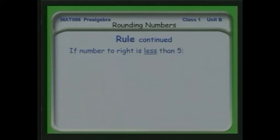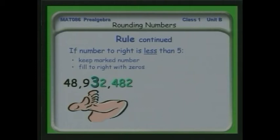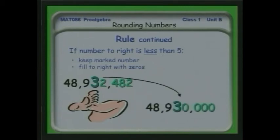Now, if the number to the right of wherever you've marked is less than 5, then we keep the marked number and fill in to the right with zeros — we don't add 1 to it. Here's another example: again rounding to the 10,000th place, but now to the right of that 3 we have 2,482. So we just keep the 3 and fill in to the right with zeros.